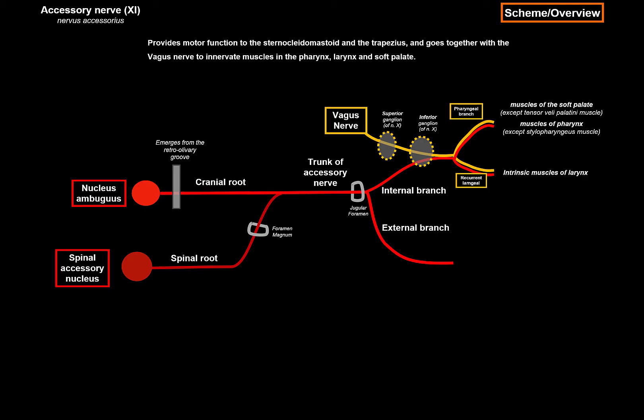The external branch is easy. It's going to descend along the neck, grab some fibers from the anterior ramus of C2, C3, and C4 from the cervical plexus, and then go innervate the trapezius and sternocleidomastoid.